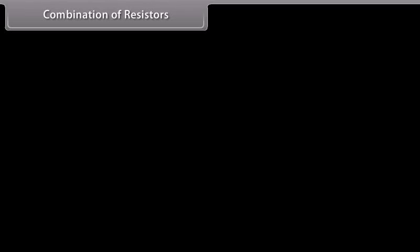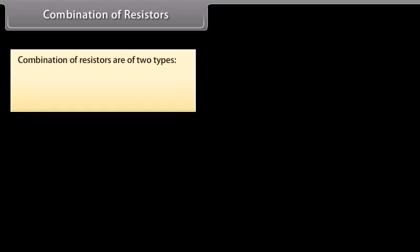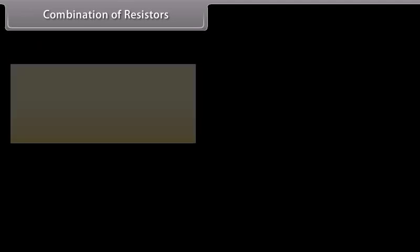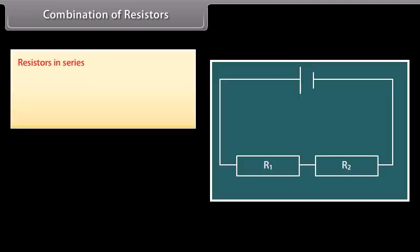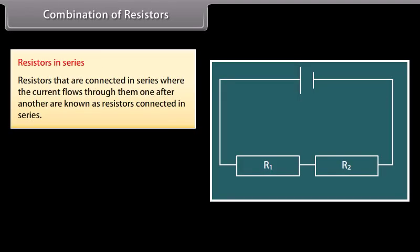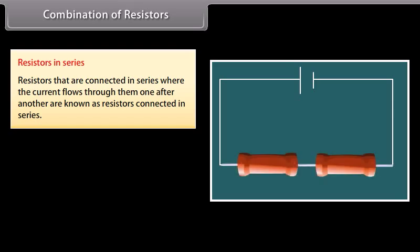Combination of resistors. Combinations of resistors are of two types: resistors in series and resistors in parallel. Resistors in series: resistors that are connected in series, where the current flows through them one after another, are known as resistors in series. Here, the current depends on the applied voltage, the number of components, and the nature of components in the circuit.